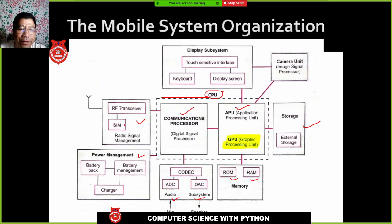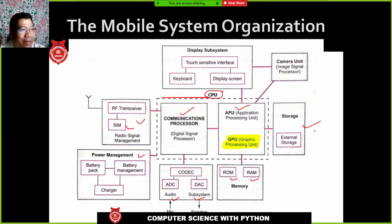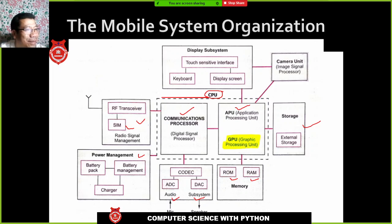The RF transceiver — transceiver means the transmitter and receiver combined together — includes the SIM. The full form of SIM in a mobile phone is Subscriber Identity Module.